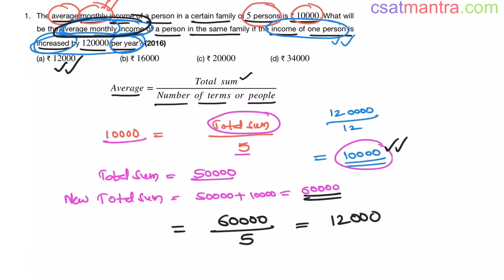There is only one formula in averages chapter my friends. That is average equals total sum by number of terms or number of people. You do not need any other formula. You can solve any problem using this formula. Let us say if the income of person in the family is decreased by some amount, then you would be subtracting here my friends instead of plus. So like this, you can solve any problem based on averages. Just go step by step. Understand what is given and pay attention whether it is a monthly income or yearly income.